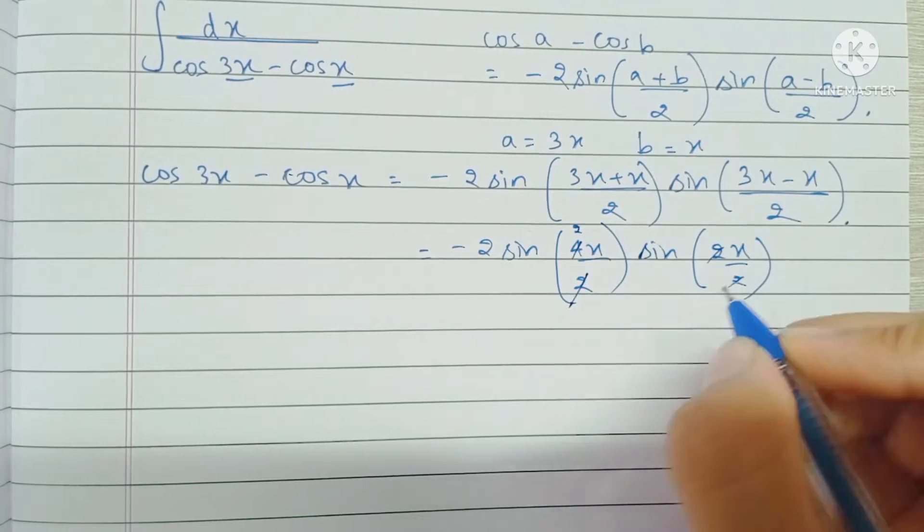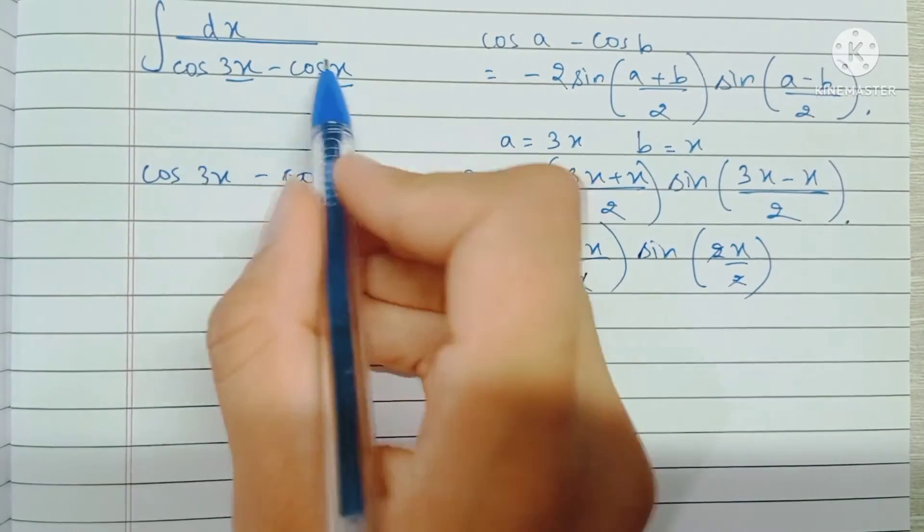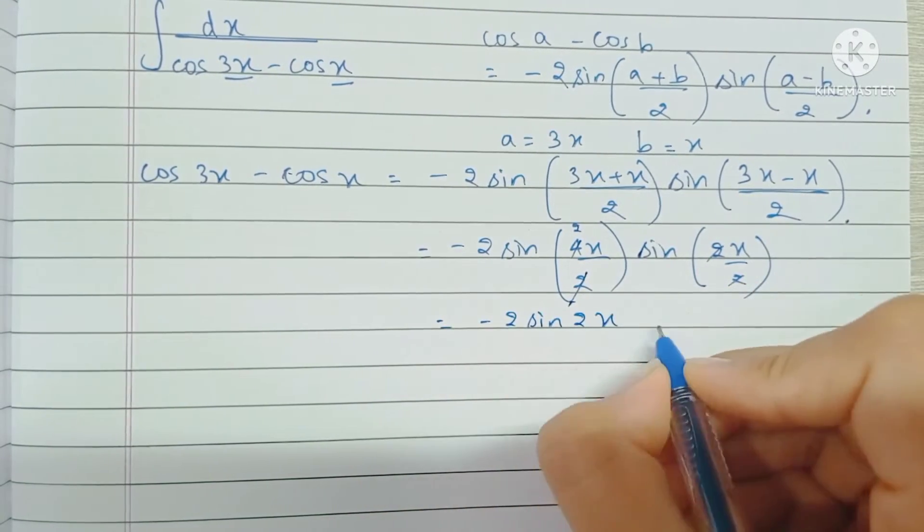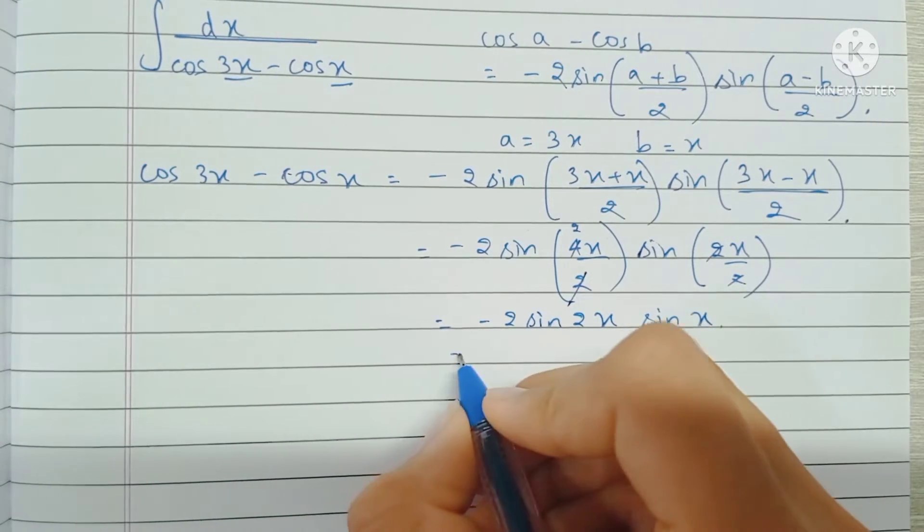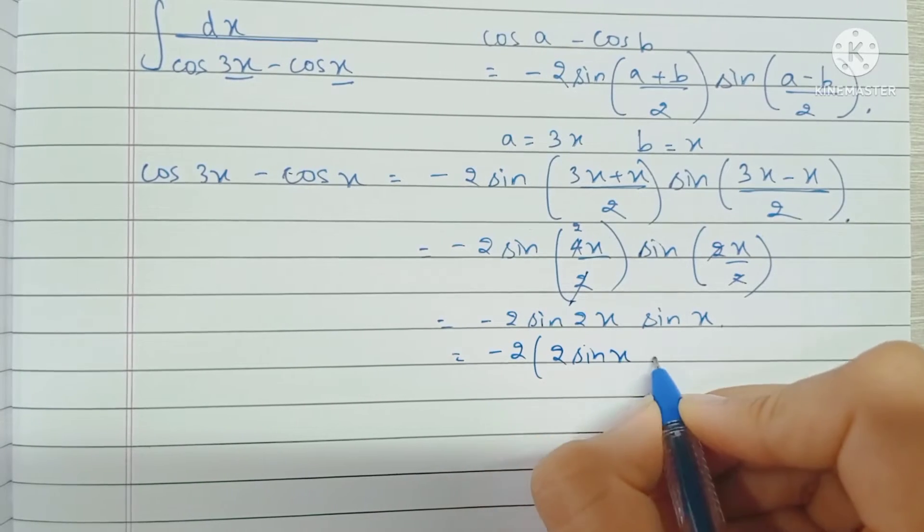Finally, we can substitute the denominator with minus 2 sine 2x sine x. But we're going to simplify this further. We're going to write sine 2x as 2 sine x cos x. This is the double angle formula for sine x.